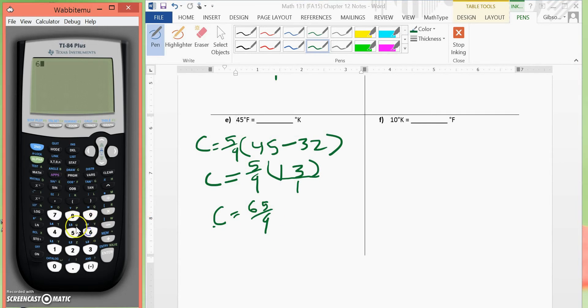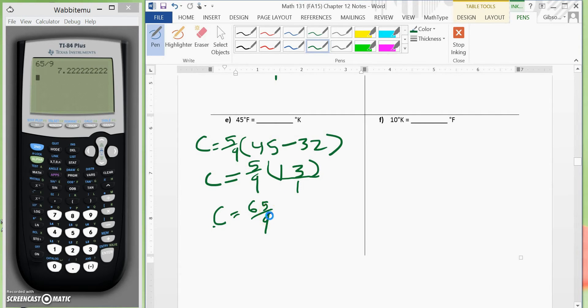We will have Celsius is equal to 65 over 9. And we will put 65 divided by 9 into our calculator. That will give us 7.2 multiple 2. So since this is a repeating decimal, let's just leave it at 65 over 9.